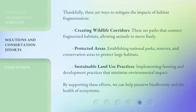Thankfully, there are ways to mitigate the impacts of habitat fragmentation. Creating wildlife corridors — paths that connect fragmented habitats, allowing animals to move freely. Protected areas — establishing national parks, reserves, and conservation areas to protect large habitats. Sustainable land use practices — implementing farming and development practices that minimize environmental impact. By supporting these efforts, we can help preserve biodiversity and the health of ecosystems.